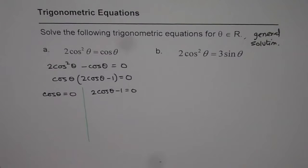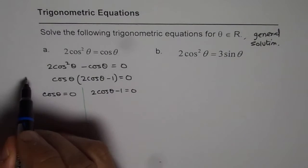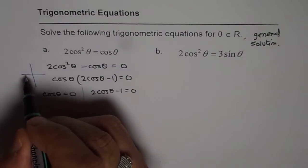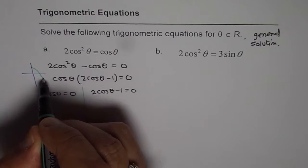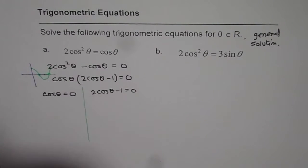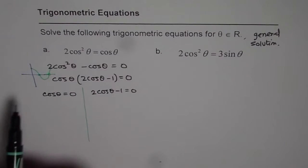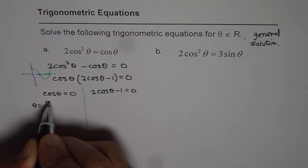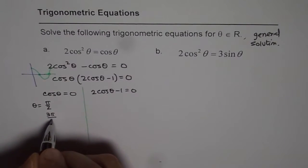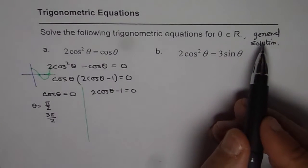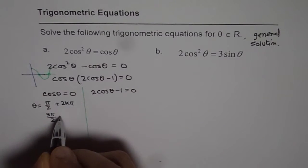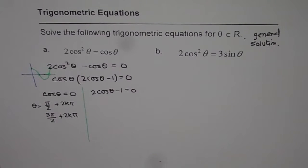Now, when is cos theta equal to 0? Let me make a sketch of the cosine function. The cosine function has zeros at pi by 2 and 3 pi by 2. So from the first factor we get theta equals pi by 2 or 3 pi by 2. Since the period of cosine is 2 pi, the general solution is theta = pi/2 + 2k pi or theta = 3pi/2 + 2k pi.